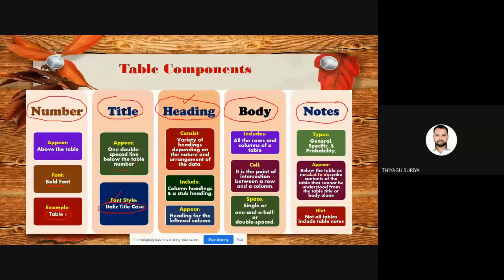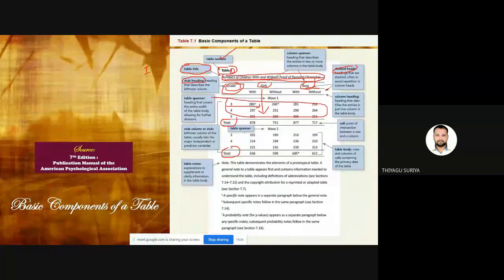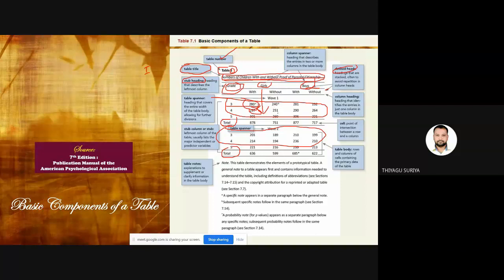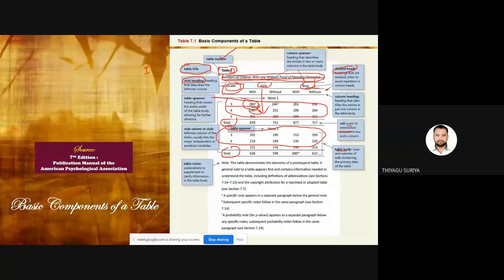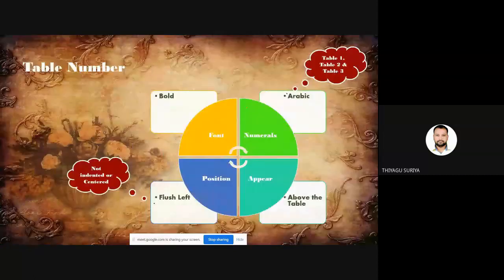The fourth component is called body. The body represents the entire numbers — each cell. The cells are the point of intersection between rows and columns. The table body is those rows and columns of cells containing the primary data of the table. The collection of cells is called the body. I hope you understand the four components. The fifth component is called notes.